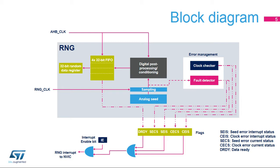Status bits are set and an interrupt is triggered if an abnormal sequence is detected in the seed or if the RNG frequency is too low. The RNG frequency error check must be disabled if the RNG clock is fixed below AHBCLK/32 — for example, for quality reasons.